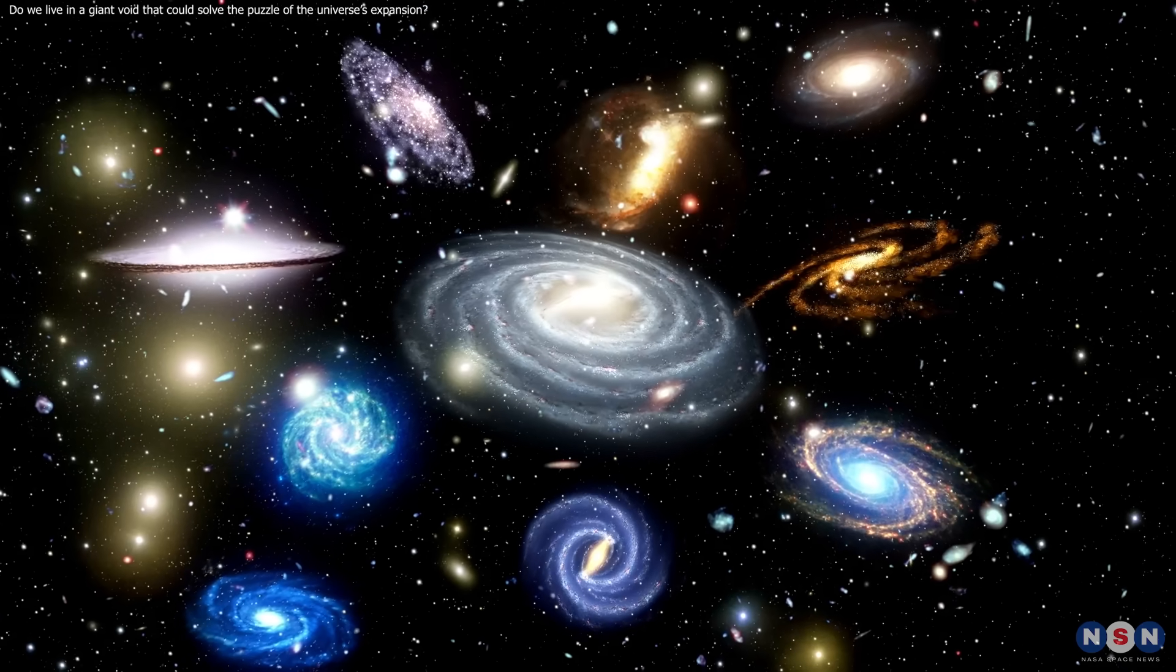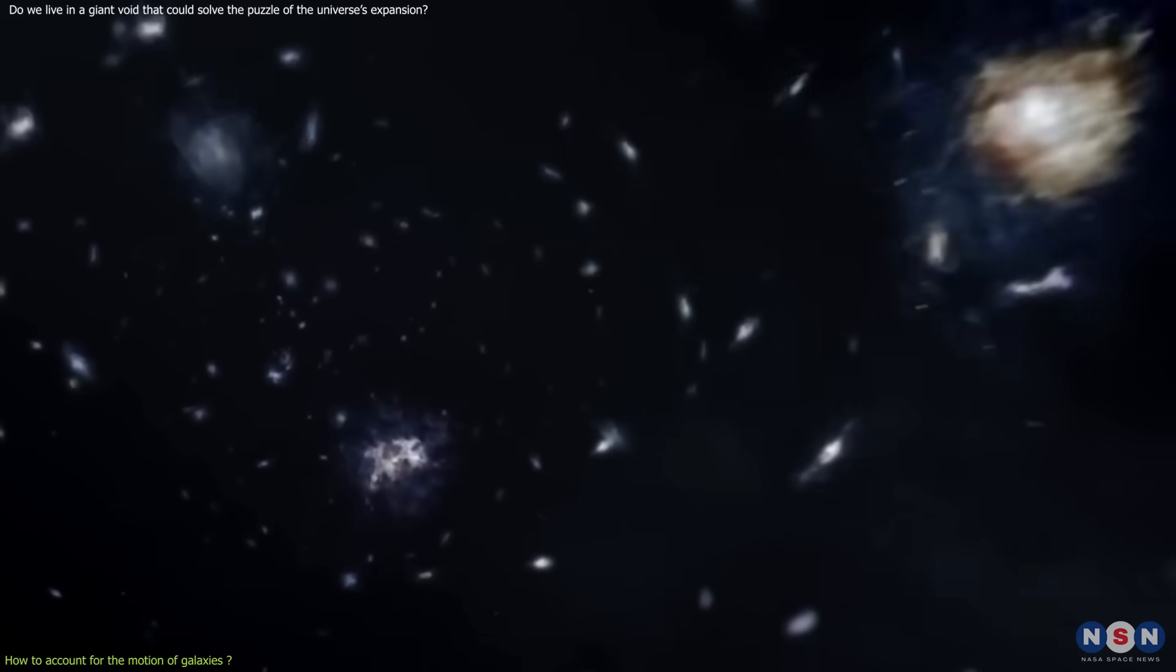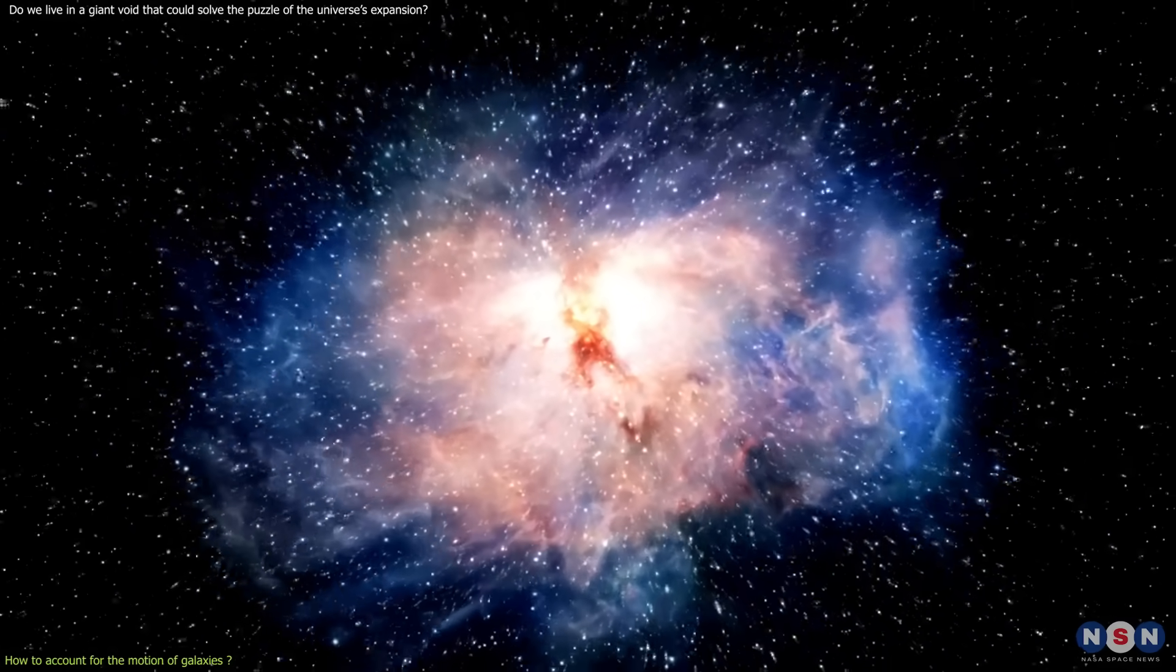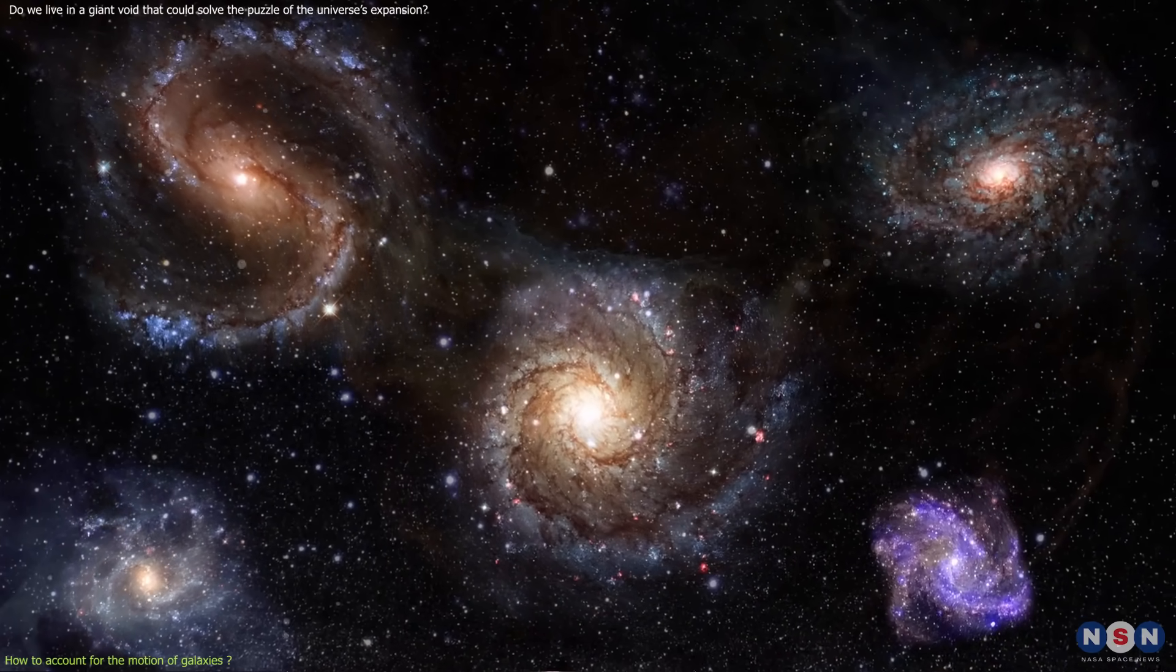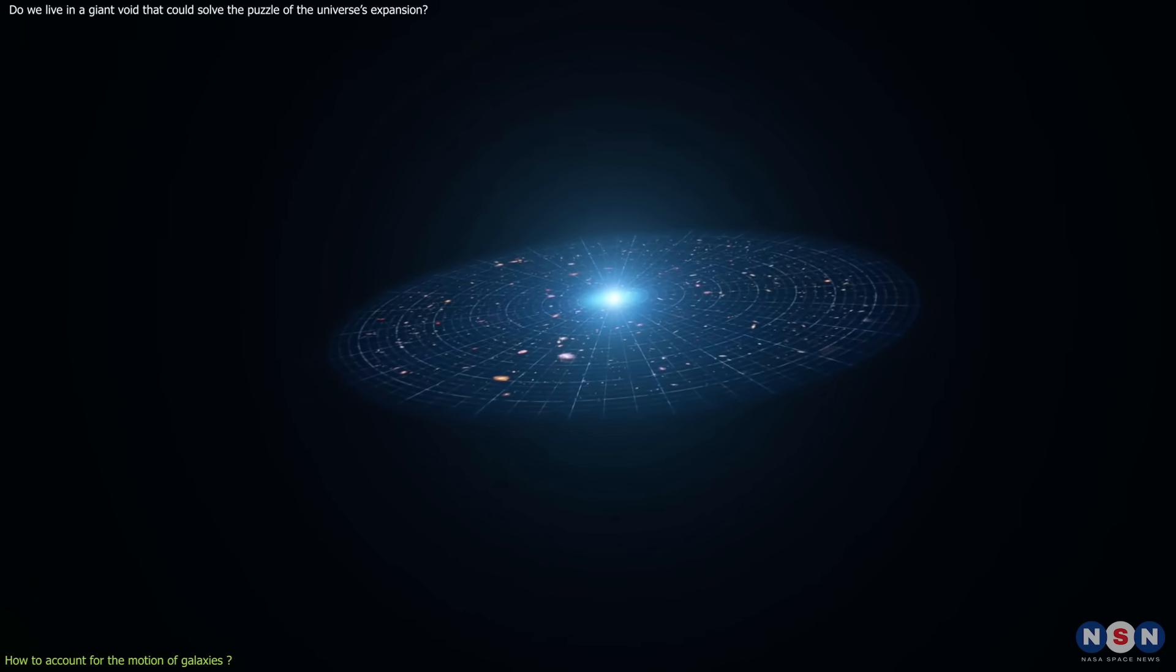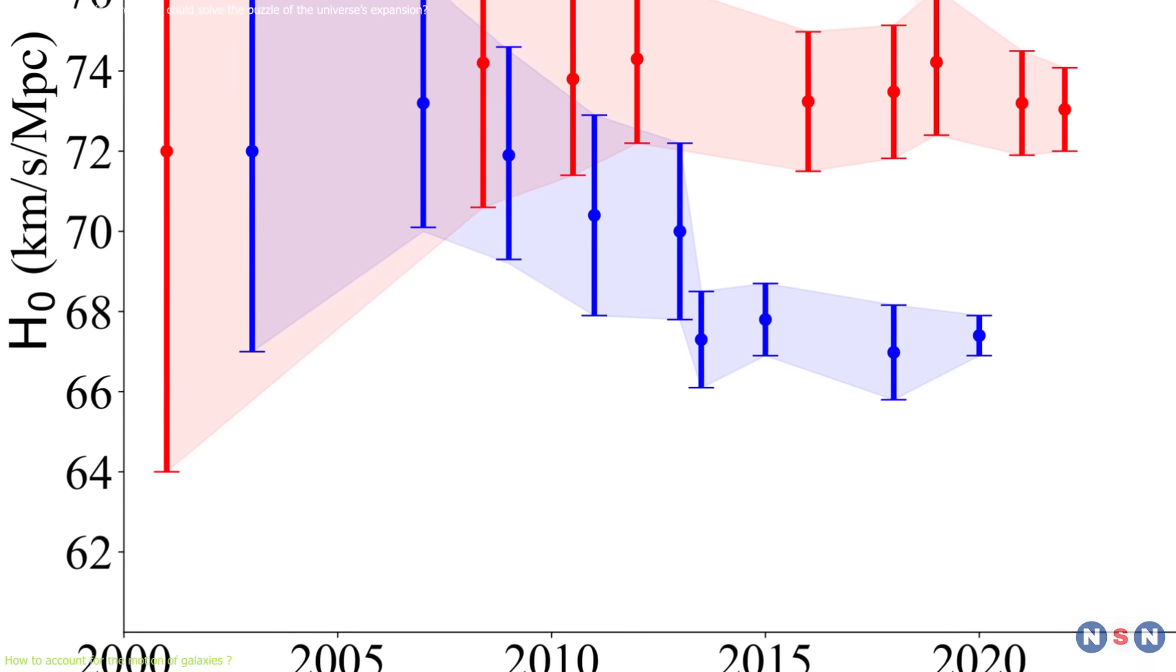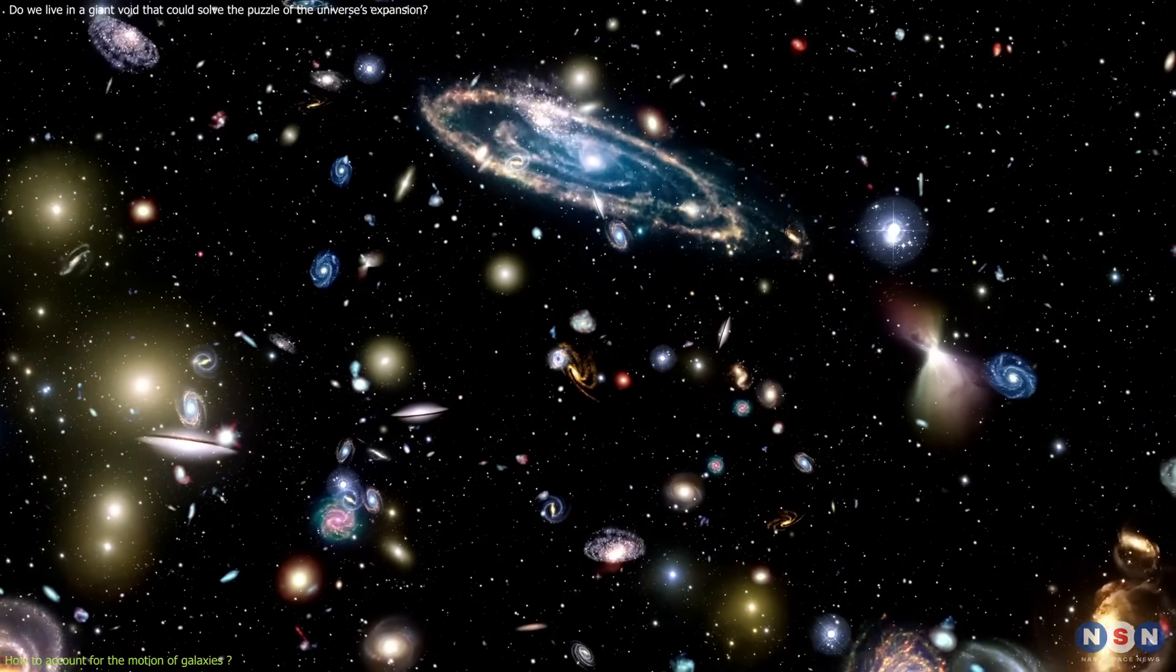But there is another piece of the puzzle that we need to consider: the motion of galaxies. Not only are galaxies moving away from us due to the expansion of space, but they also have their own peculiar velocities due to the gravitational attraction of nearby matter. These peculiar velocities can affect the measurement of the Hubble constant, especially for the supernovae method, which assumes that the galaxies are only moving due to the expansion of space. If we do not correct for the peculiar velocities, we may overestimate or underestimate the Hubble constant, depending on the direction and magnitude of the motion.